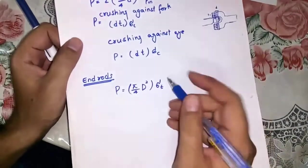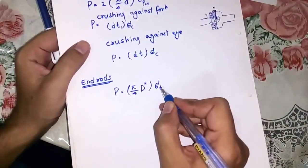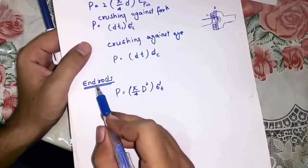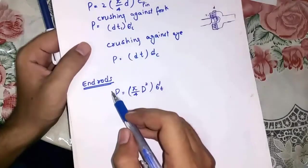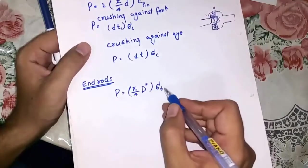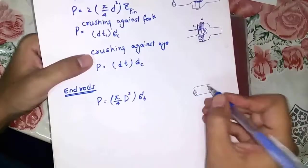Circular cross-section area into stress. Remember, end rods of the knuckle joint always fail in tension, but in the case of end rods of cotter joint, they either fail due to tension or due to compression. End rod would fail like this. This is cross-sectional view.